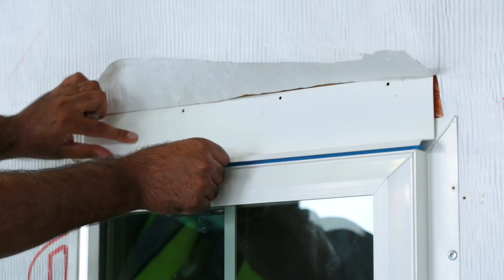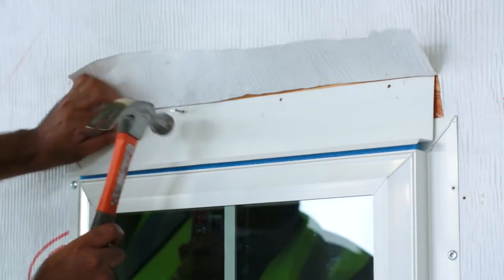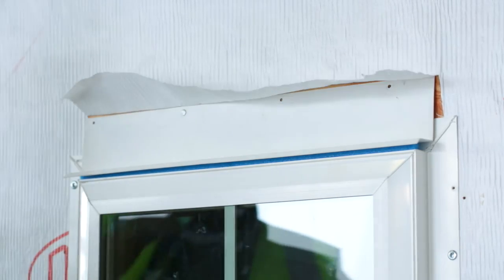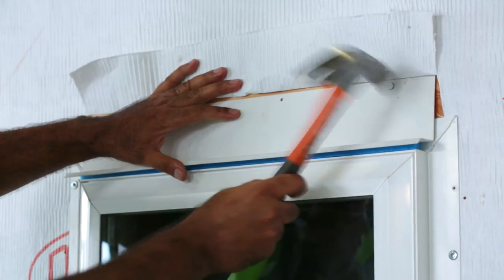Drip flashing must be installed under both weather-resistive barriers to provide positive water drainage. Using the nail hole, the drip flashing is attached. Compression is not required. Contact is.